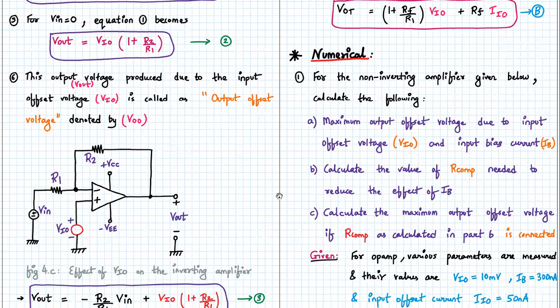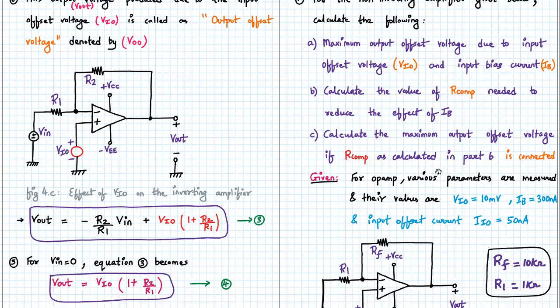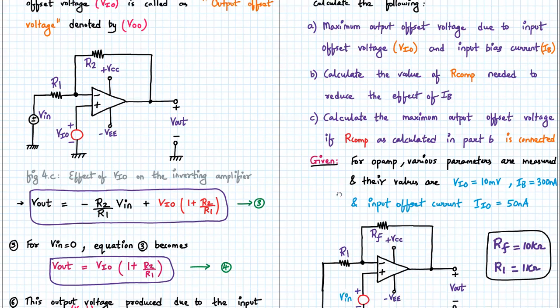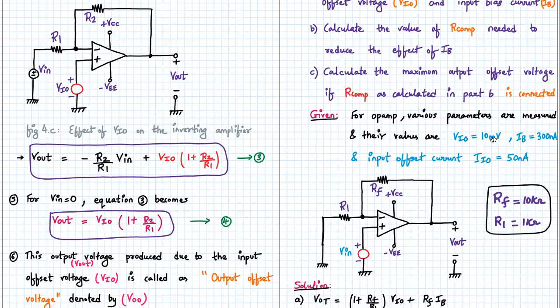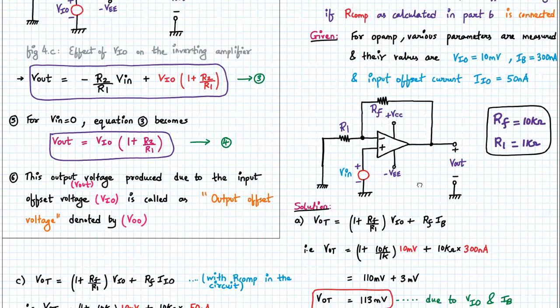So the numerical has come. For the non-inverting amplifier given below, calculate the following: maximum output offset voltage due to input offset voltage and input bias current, then calculate the value of RCOM needed to reduce the effect of IB, and the third part, calculate the maximum output offset voltage if RCOM calculated in part B is connected. So we recalculate A with RCOM connected. The op-amp parameters are measured and their values are VIO is 10 millivolt, IB is 300 nano amperes, and input offset current IIO is 50 nano amperes. Over here, the value of RF and R1 are given 10 kilohm and 1 kilohm.